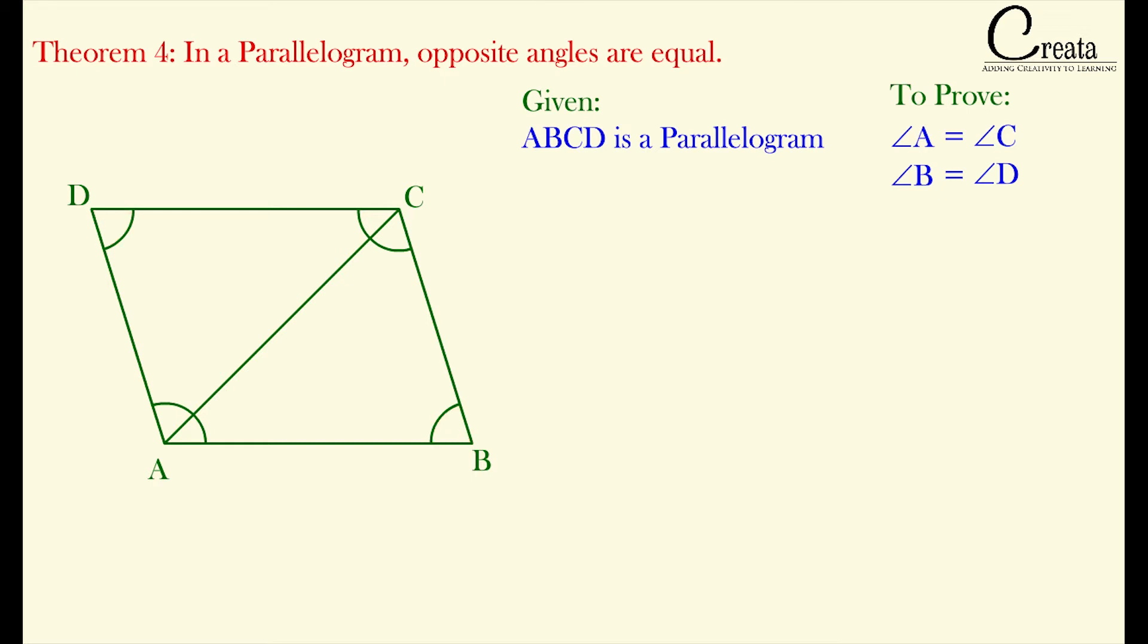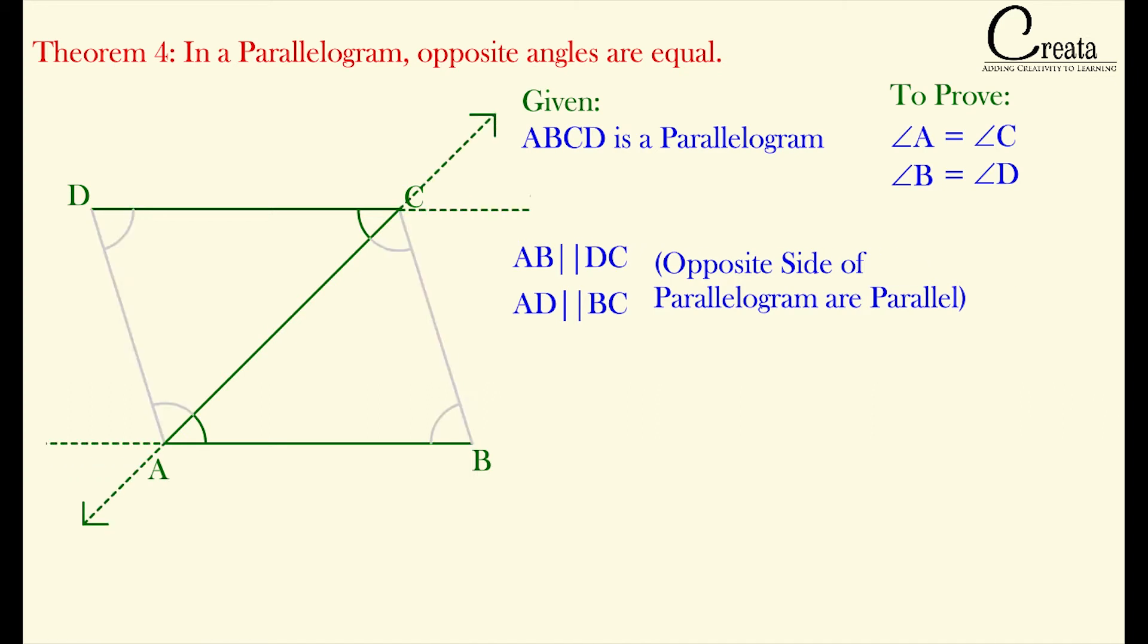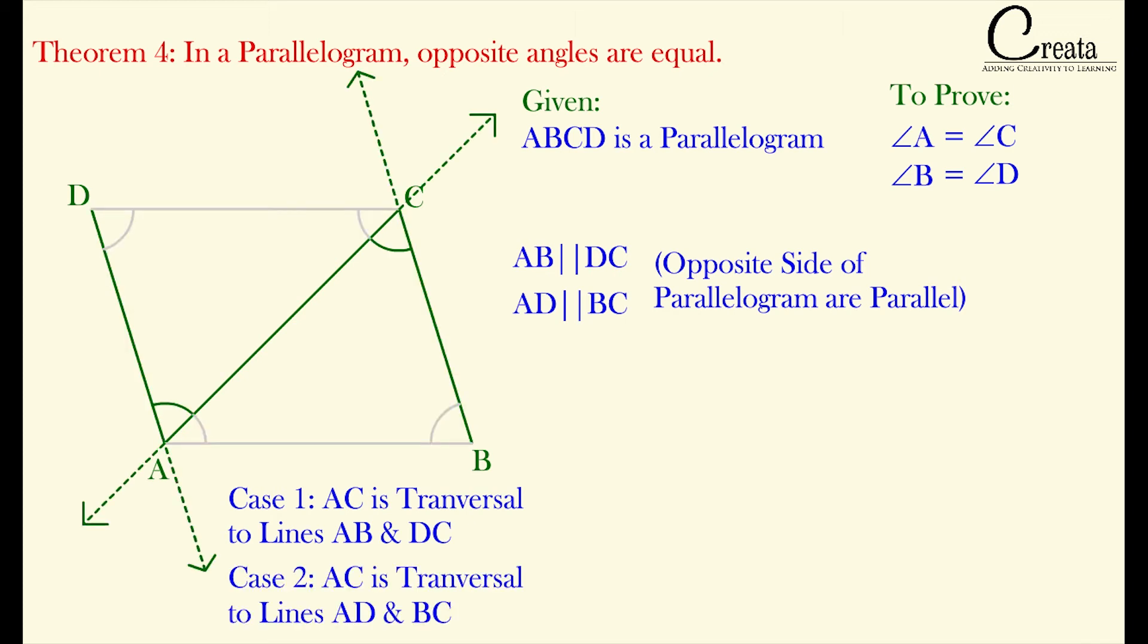Being a parallelogram, opposite sides are parallel. So AB is parallel to DC and AD is parallel to BC. Here we are getting 2 cases of transversal. In the first case, AC is the transversal to lines AB and DC. In the second case, AC is the transversal to lines AD and BC.